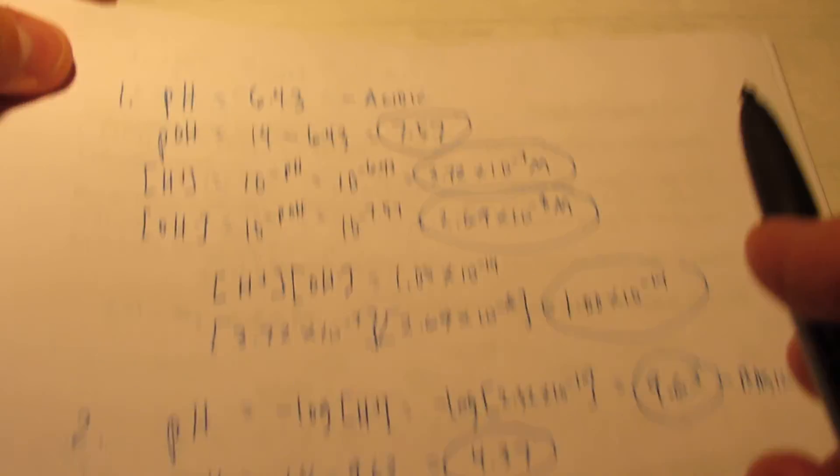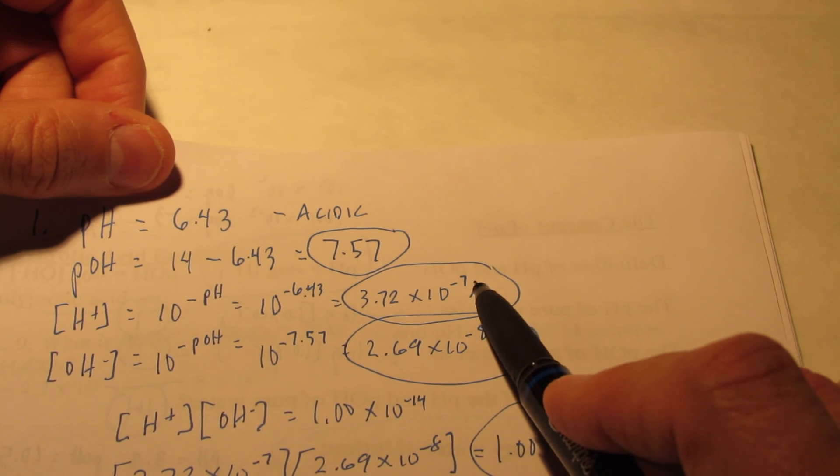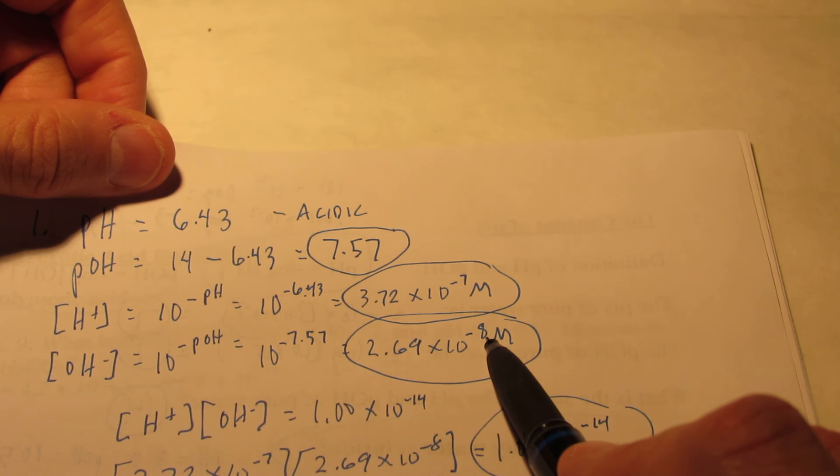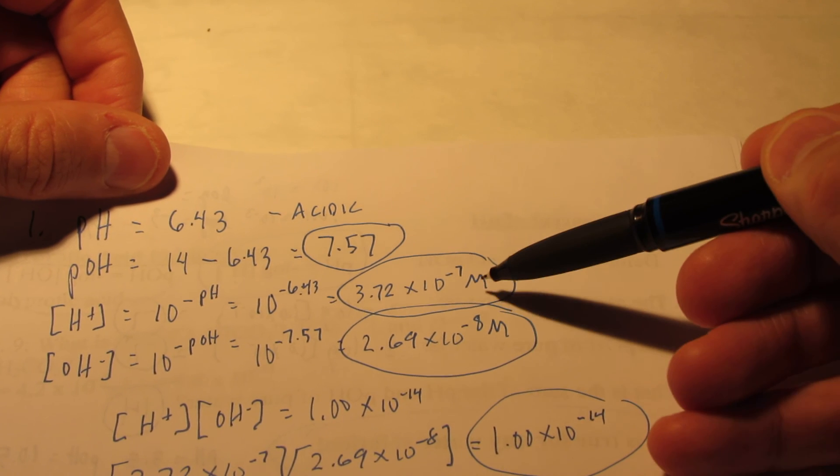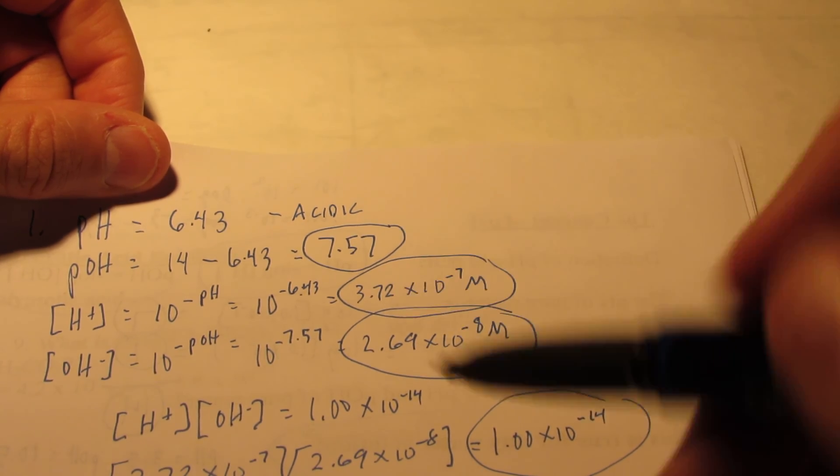Let's look at one that was acidic up here. Here, do you see the hydronium ion concentration is 10 to the negative 7th? And the hydroxide is smaller. It's 10 to the negative 8th. So, the hydronium ion concentration is bigger. That's why it's acidic.